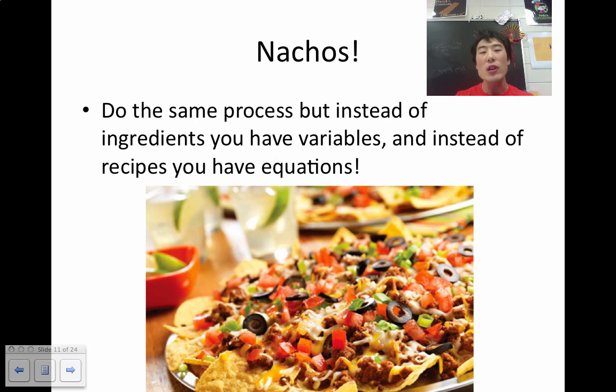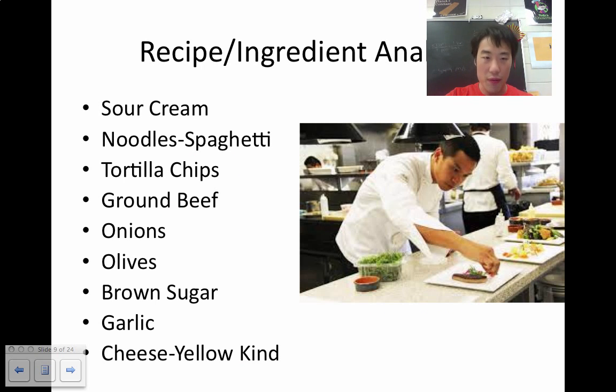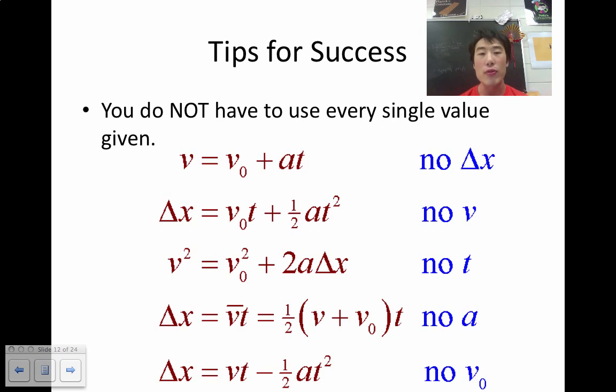What you need to do is do the same process. Go through your ingredients or your variables and go through each equation to see which equation you can use. Now, if you can think back to the analogy, we had an ingredient that we did not even consider. Brown sugar. In your nacho recipe, you will not need to use brown sugar or even spaghetti. That is the same for these equations.